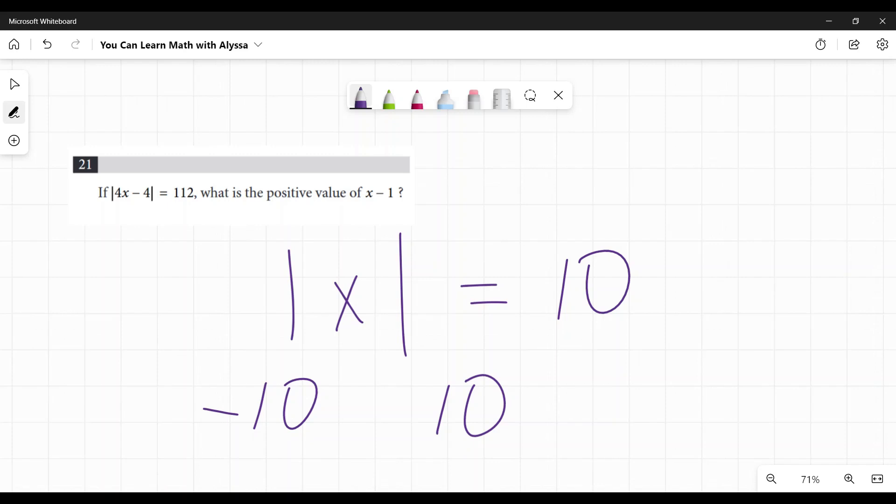Absolute value, what it technically means is how far away is the number from the zero point and negative 10 and positive 10 on a number line are both 10 units away from zero. That's what it means in our real world application. It basically just means make it positive. So negative 10 becomes positive 10, positive 10 stays the same.